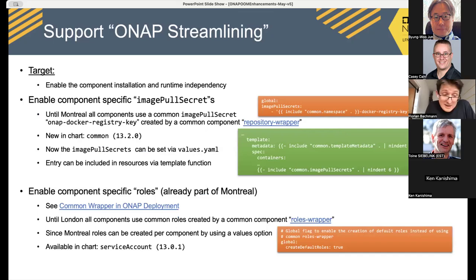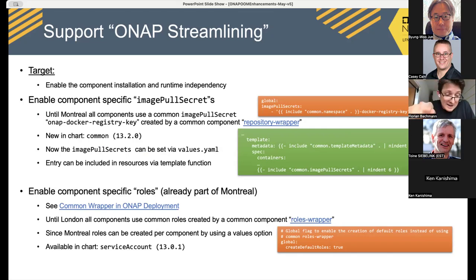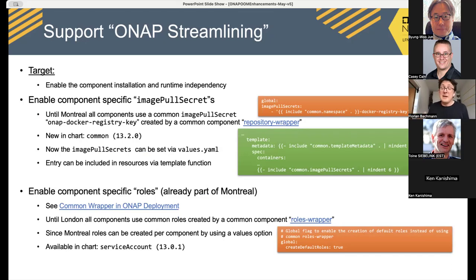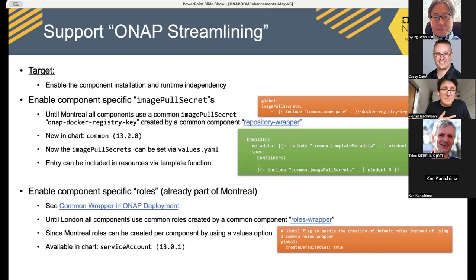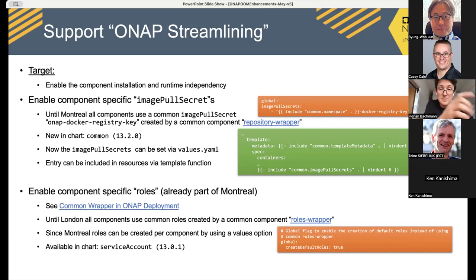As we learned, ONAP is not a platform anymore but rather a list of components that supports use cases and can be selected by a company like DT to fulfill their requirements — for example for a use case like slicing. As decided by the TSC, we should be able to pick certain components to deploy separately. Therefore we cannot rely on every ONAP application being deployed — it's splitting the ONAP monolith into separate microservices, and those common wrappers had to go.